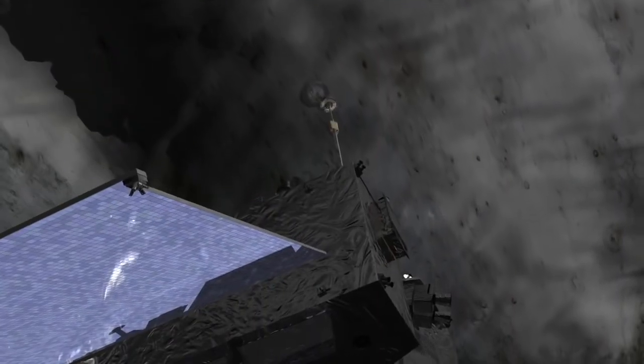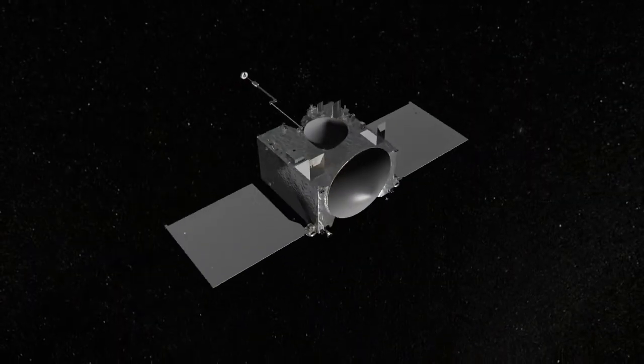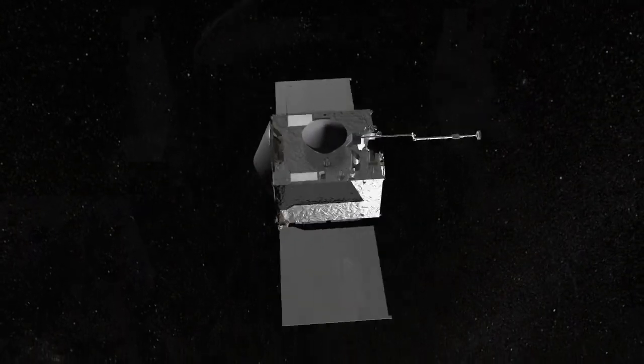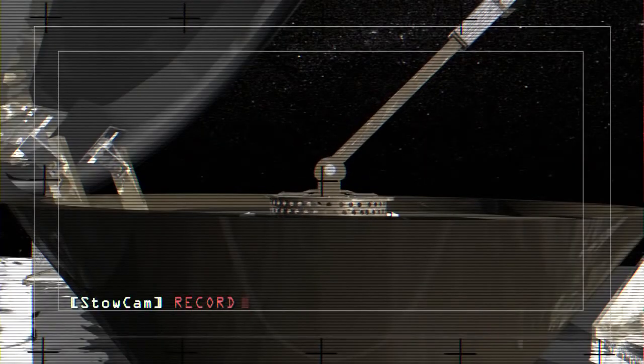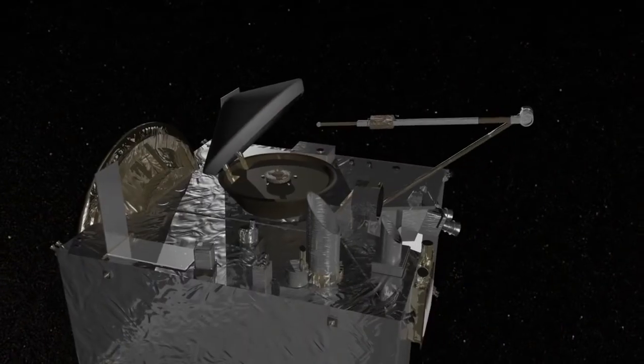After moving away from the surface, OSIRIS-REx will perform a spin maneuver to measure the mass of the sample, then it will carefully stow the TAGSAM head inside the sample return capsule and prepare for the journey back to Earth.